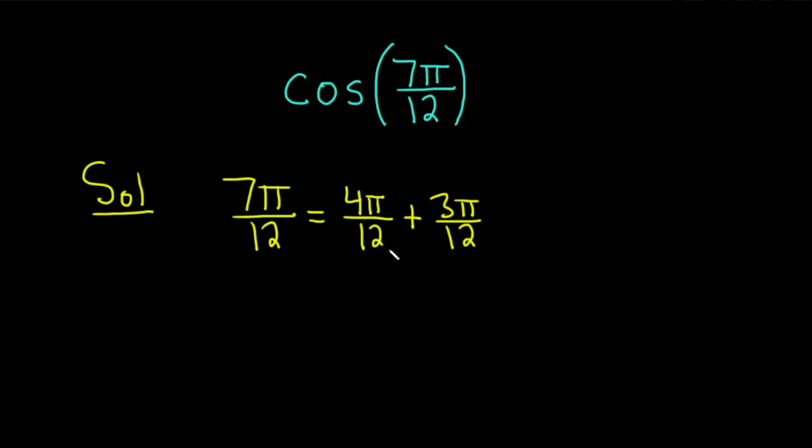These might not seem familiar yet, but we can simplify this. 4 goes into 12 three times. We end up with π over 3.